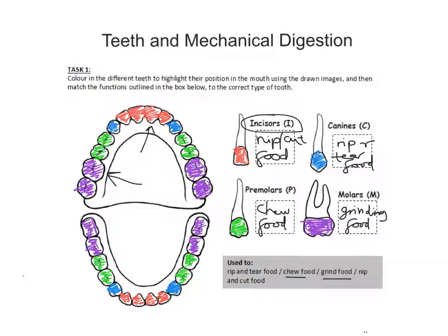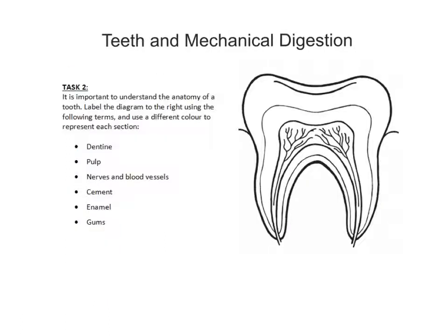Let's move to task two. In task two students identify the parts that make up the structure of the tooth. In the syllabus you need to know the name of each part. The dentine is this inner part here. Around the dentine — where I'm drawing this asterisk — that would be the enamel, surrounding the dentine at the top.